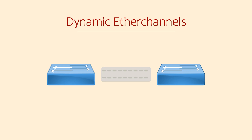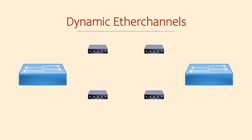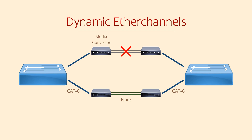Here's another reason to use LACP on EtherChannels. Sometimes we have a passive device between our switches — perhaps a media converter that converts fiber links to copper links. If the media converter fails, the switch links may appear to stay up. The switches are blissfully unaware that there's a problem and will continue sending traffic over the failed link, resulting in traffic loss.